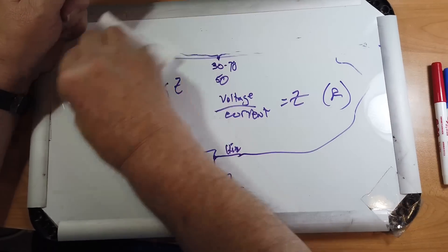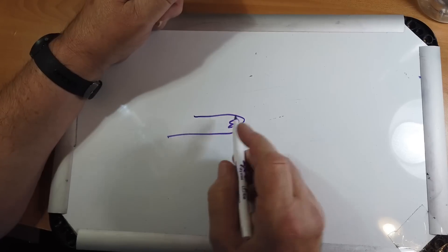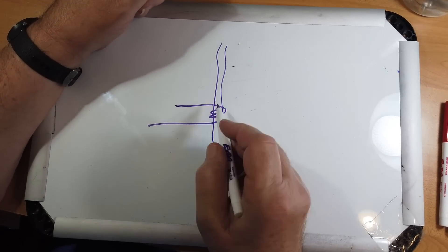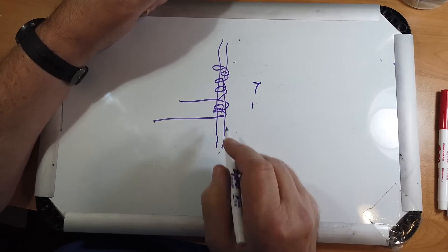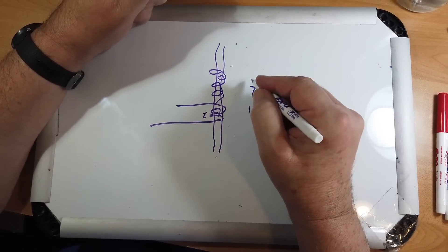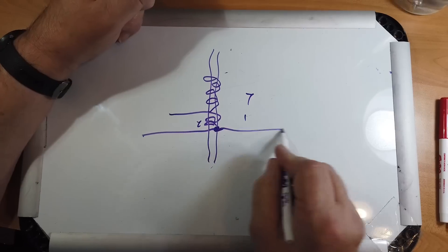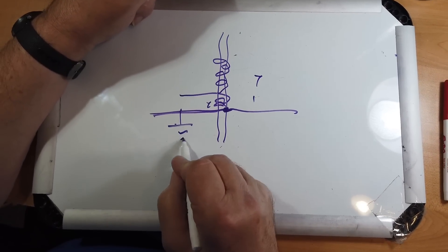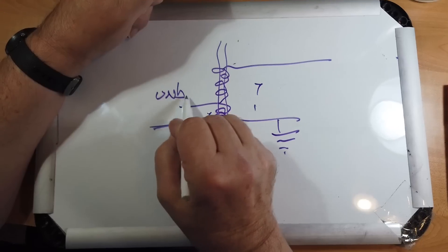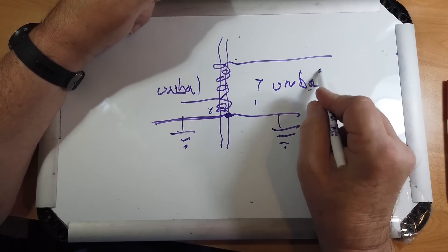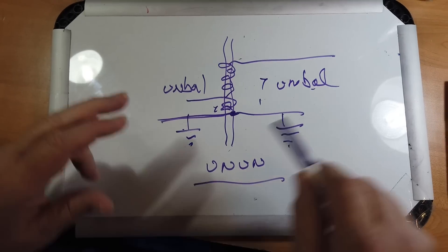This is quite a common way of doing things. The diagram showed two turns — it's actually an autotransformer. You continue on for more turns to get a turns ratio of 7 to 1. Note that the bottom is grounded on both sides, so this is unbalanced to unbalanced — hence the term un-un.